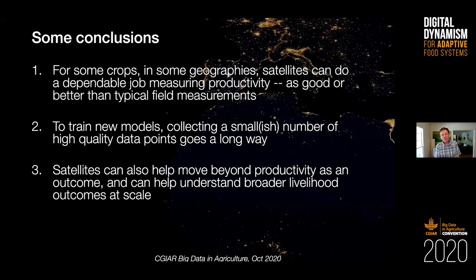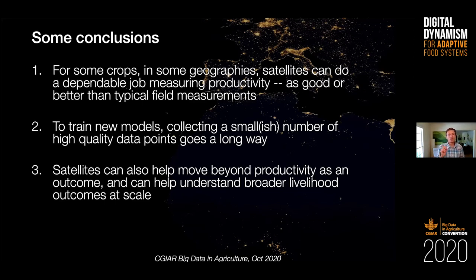So some quick conclusions. This doesn't work yet for every crop, but for some crops where we have some data to train, in some geographies where we've been able to evaluate them, satellites can do a pretty dependable job of measuring productivity — we've shown that now in a lot of papers, others have as well. These measurements can be, we think, as good or even better than the typical measurements we have of productivity on the ground. To train new models, often just collecting a small number of very high quality data points can go a long way to training or validating a model in a new location — a few dozen very high quality data points is often all you need to get a good sense of whether it's working. And finally, we think satellites can move beyond just these agricultural applications to measure broader livelihood outcomes in a way that's really useful for a lot of the impact assessment that we want to do. I'll stop there and look forward to the discussion.